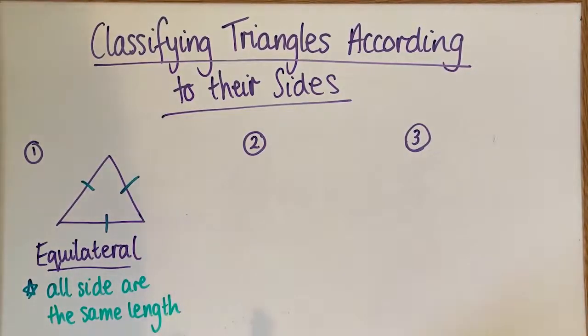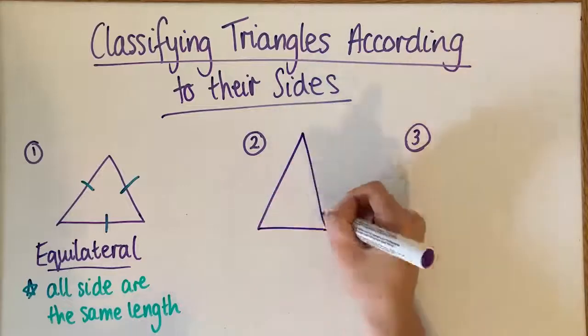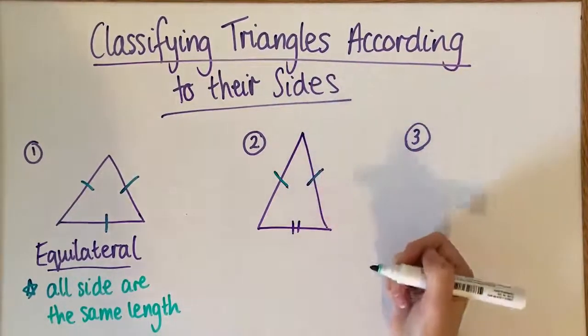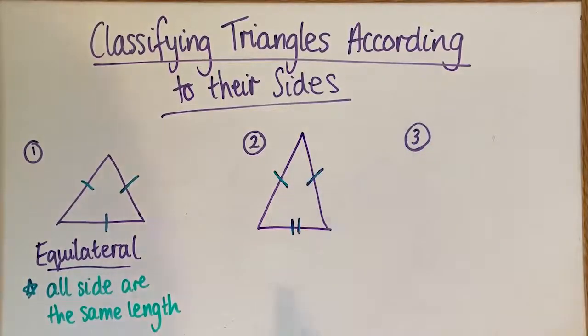All right, then the second type of triangle we have. You can see here from the way I've marked it that we've got two sides that are the same and one that is different.